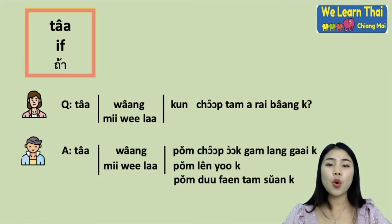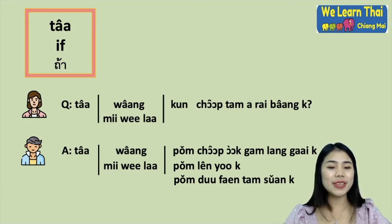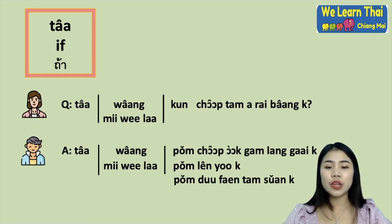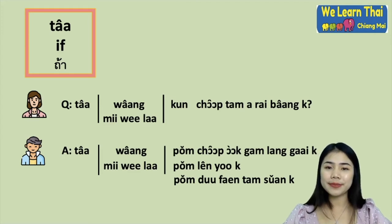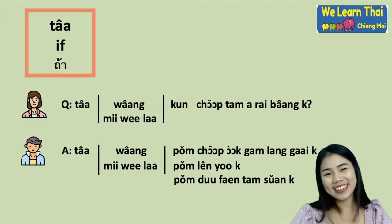For the answer: 'Thaa wâang pom chôb òok gam-lang gaai kráb' — if you are free, I like to exercise. Or you say 'Thaa mii we-laa pom lên yo-gâa ká' — if I have time, I like to do yoga. 'Thaa mii we-laa pom duu faen tham suan' — if I have time, I like to watch my girlfriend gardening.